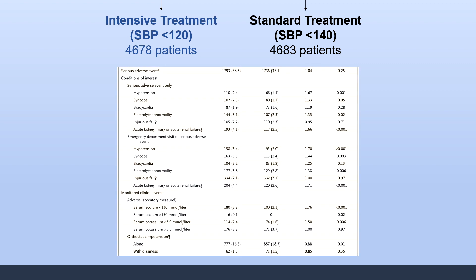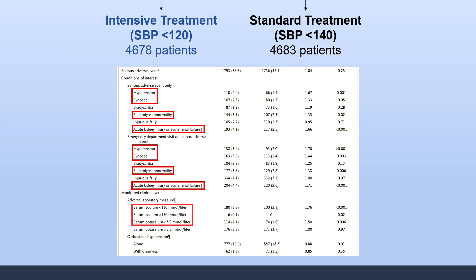Looking at adverse events, as expected there were more medication-related adverse events in the intensive treatment group. Significant increased adverse events included hypotension, syncope, electrolyte abnormality, AKI, and some lab abnormalities. Of note, however, the authors found there was no increase in injurious falls compared to the standard treatment group, and paradoxically, orthostatic hypotension was actually significantly lower in the intensive treatment group.